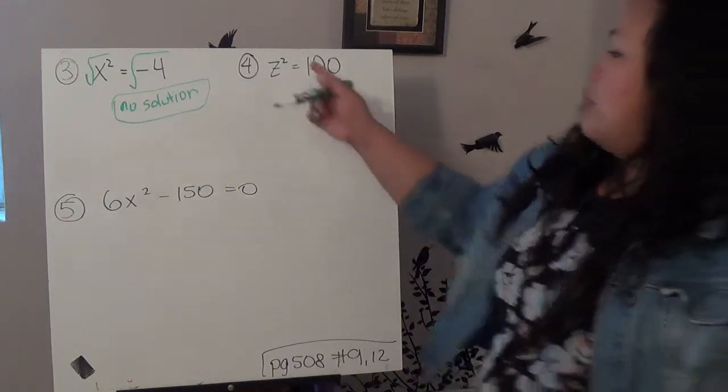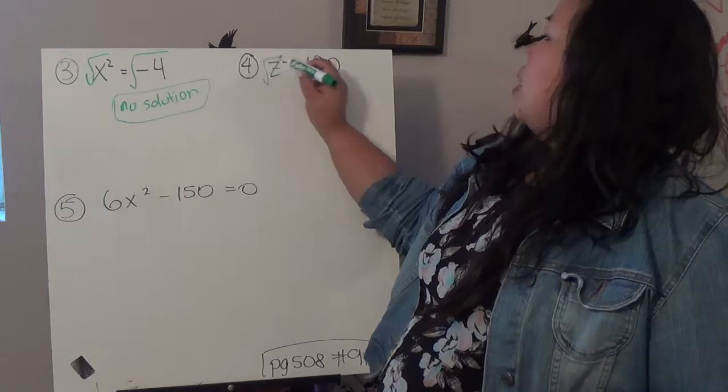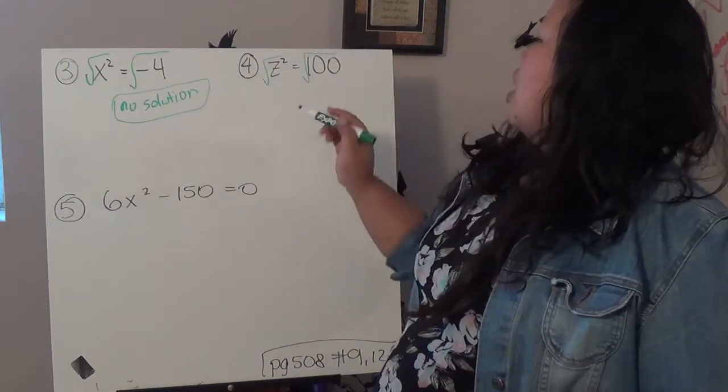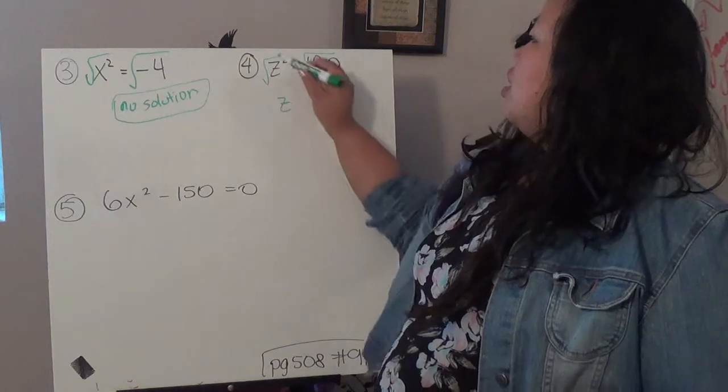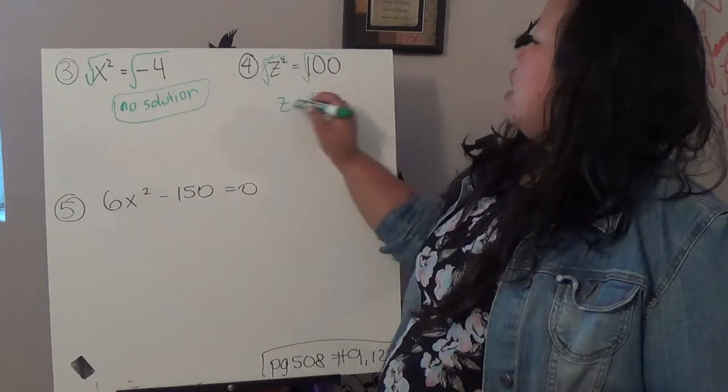Alright? Same concept here, negative 4. I'm going to square root both sides. I end up with z. The square root of 100, this cancels out, the square root of 100 is 10.